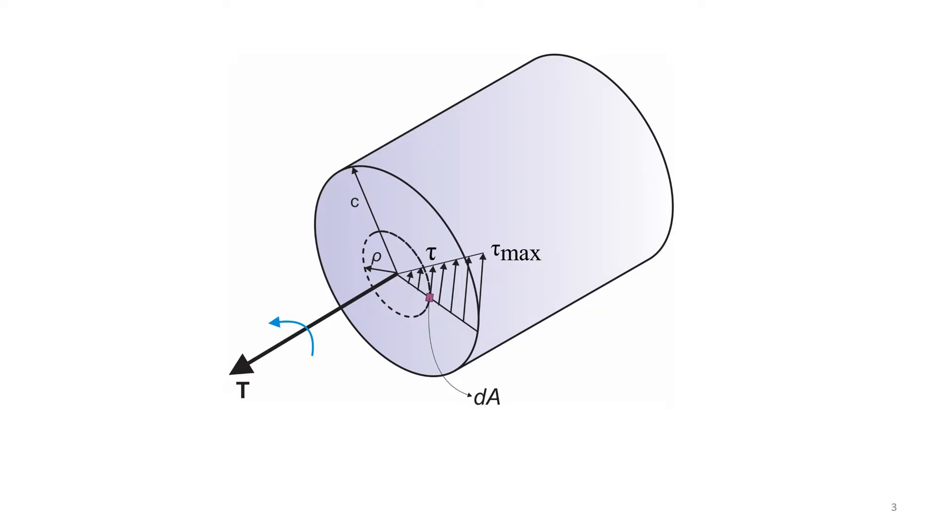The straight prismatic bar of circular cross-section is the most common structural element subjected primarily to torsion. Consider, for example, the transmission shaft used in conjunction with most engines.